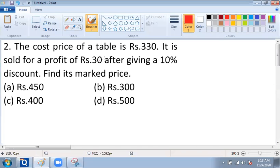It is given the cost price of a table is Rs. 330. So CP, that is the cost price, is equal to Rs. 330.